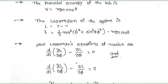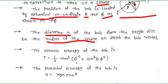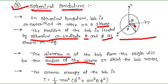Now Lagrangian's equations of motion are given by the general equation: d/dt (∂L/∂q̇ⱼ) minus ∂L/∂qⱼ equals zero. Here the bob in the spherical pendulum requires two spherical coordinates, that is theta and phi. If theta and phi change, then the position of the bob changes. That means the two variables are theta and phi, so here we apply Lagrangian's equation of motion for each.